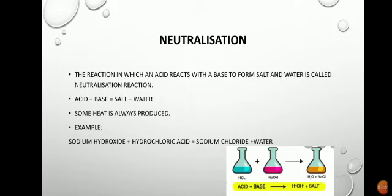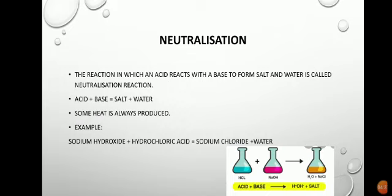Now let me describe a demonstration activity. We take 5 mL of dilute hydrochloric acid solution in a test tube — not concentrated. The hydrochloric acid solution is colorless. Add two or three drops of phenolphthalein indicator, which is a synthetic indicator, and shake the test tube gently. Since both hydrochloric acid and phenolphthalein are colorless, the mixture remains a colorless acidic solution.